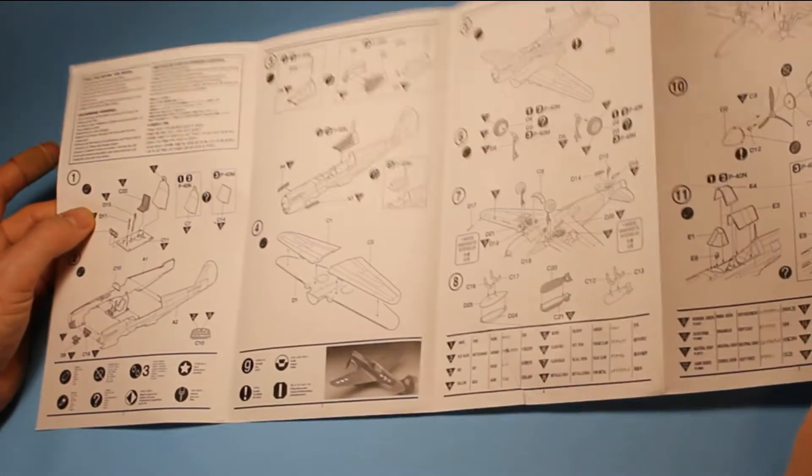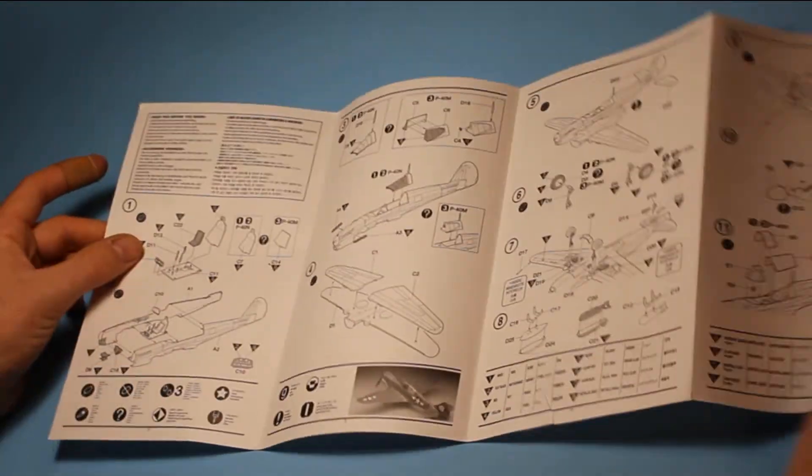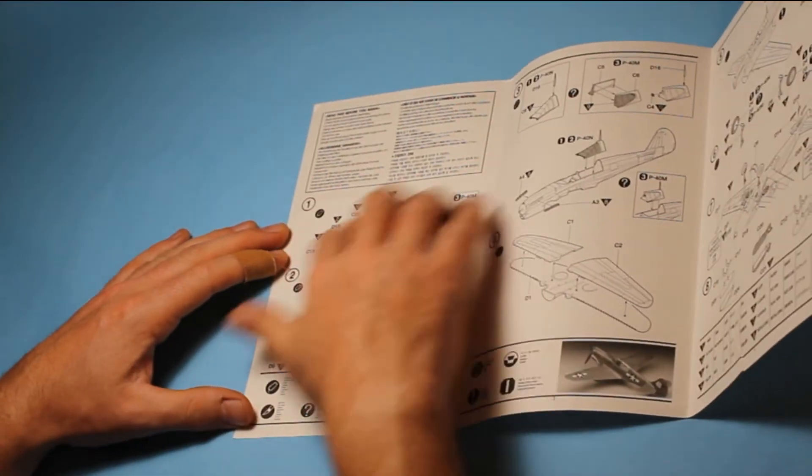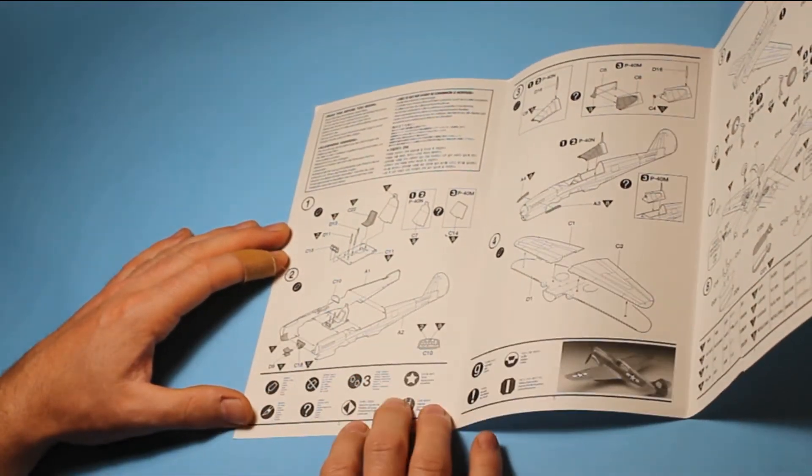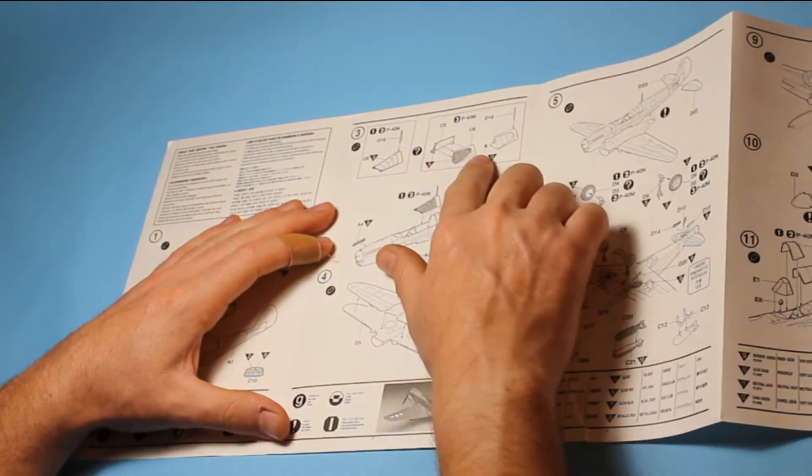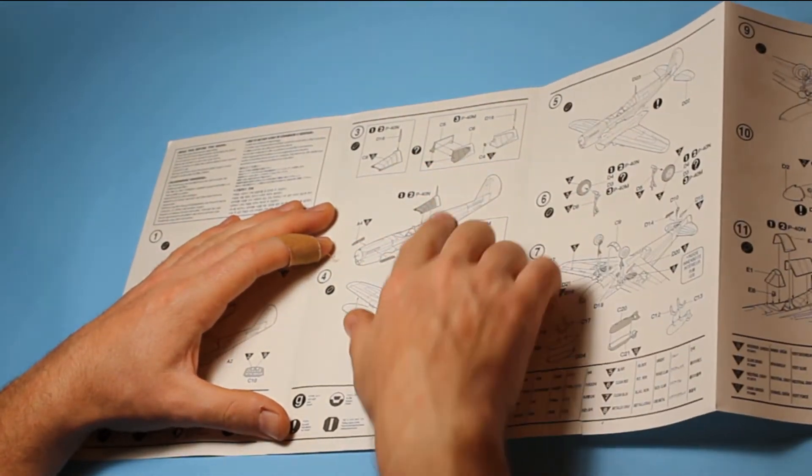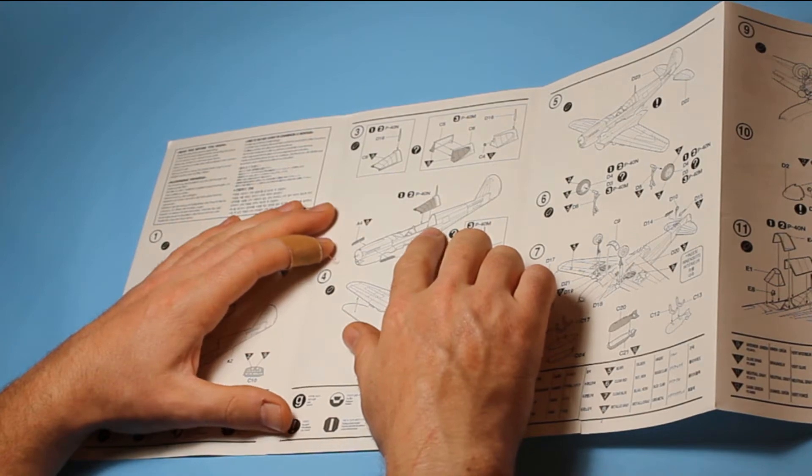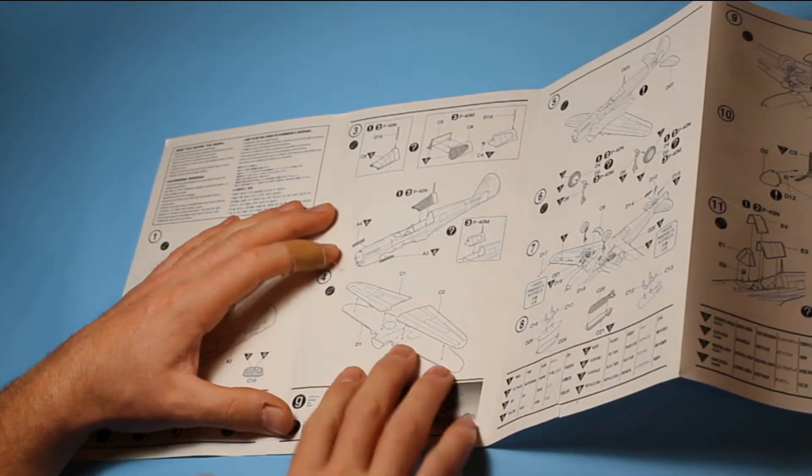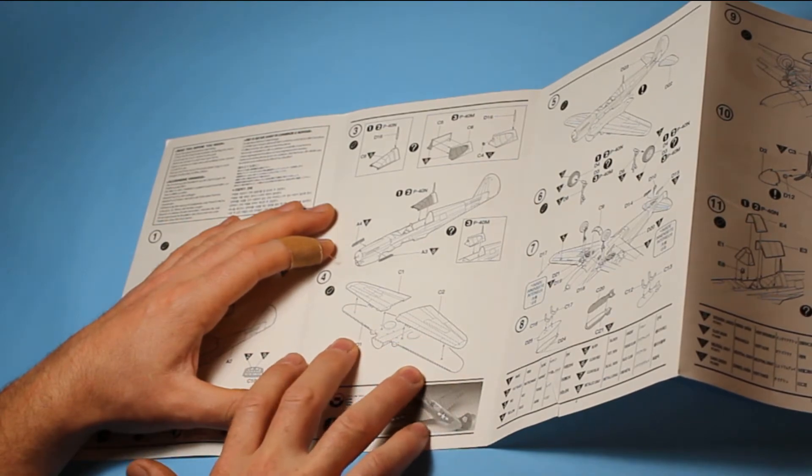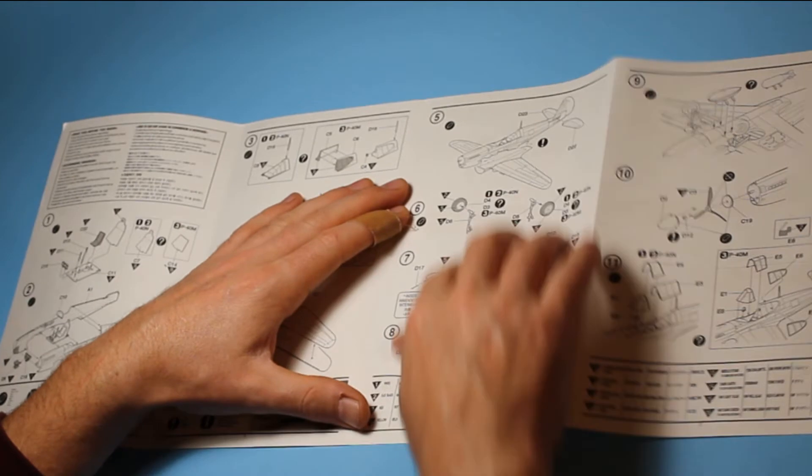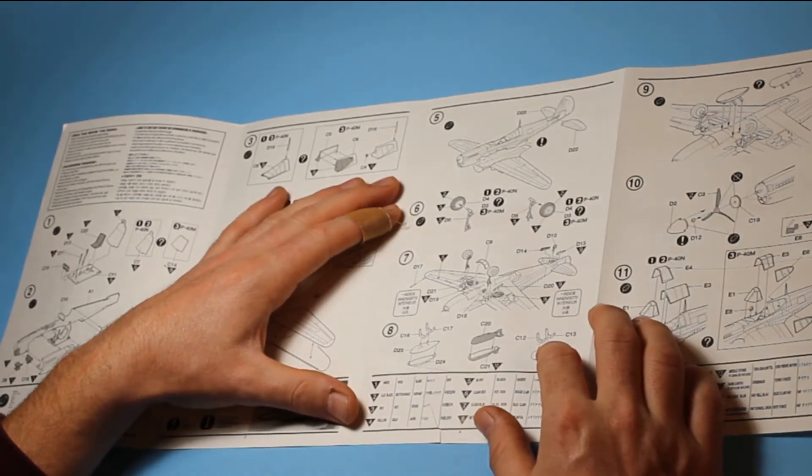It's a fold-out type of instructions there and pretty basic and straightforward. It's quite easy to follow. You've got the cockpit and the fuselage halves coming together and then a choice whether you're doing the N or the M version. That makes up the rear part to the cockpit or fuselage. Then you join the lower wing with the two parts of the upper half of the wing coming together there and then you start with the landing gear.